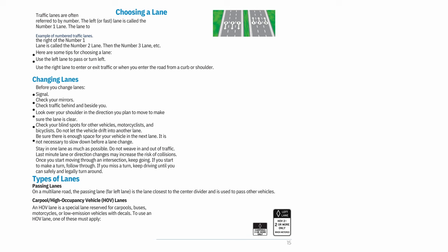Types of lanes — Passing lanes: On a multi-lane road, the passing lane (far left lane) is the lane closest to the center divider and is used to pass other vehicles. Carpool/High-Occupancy Vehicle (HOV) lanes: An HOV lane is a special lane reserved for carpools, buses, motorcycles, or low-emission vehicles with decals.